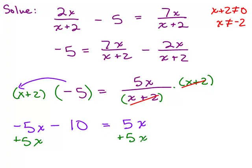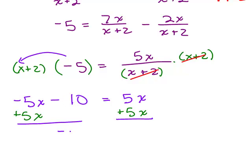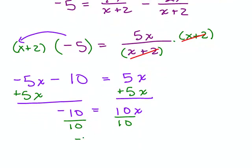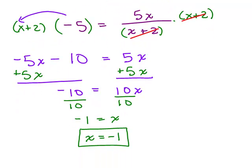This should be the easy part — the hardest part was eliminating the fractions. On the left side we have negative 10 equals 10x. Dividing both sides by 10 gives negative 1 equals x, or x equals negative 1. Going back, we said x can't be negative 2, and we didn't get negative 2, so we hope this is the correct solution — we need to check x equals negative 1 in the original equation.